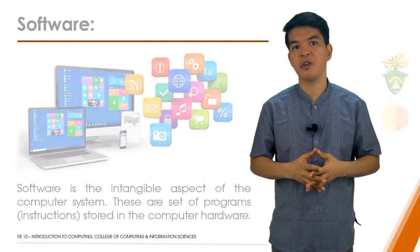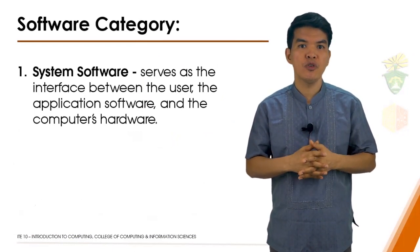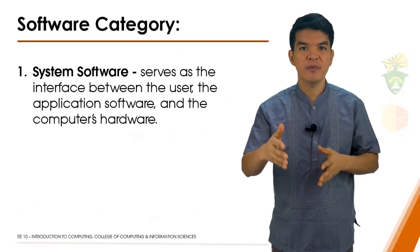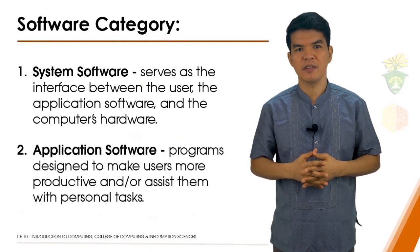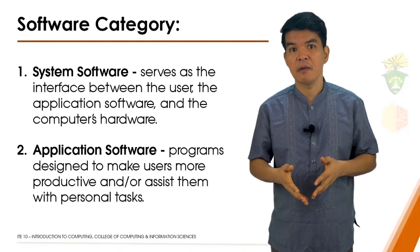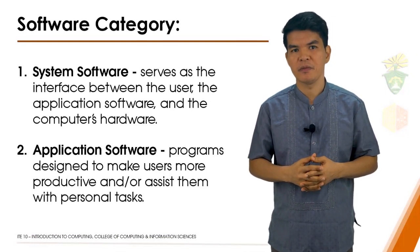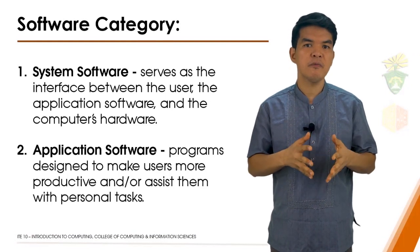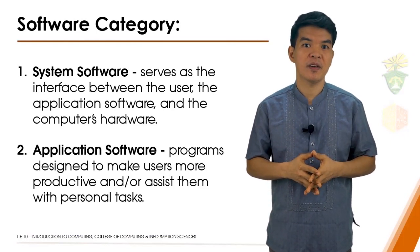There are two categories of software. First, system software — consisting of programs that control or maintain the operations of the computer and its devices. System software serves as the interface between the user, the application software, and the computer's hardware. Second, application software — consisting of programs designed to make users more productive or assist them with personal tasks. A widely used type of application software related to communications is a web browser, which allows users with internet connections to access and view web pages or access programs. Other popular application software includes word processing software, spreadsheet software, database software, and presentation software.